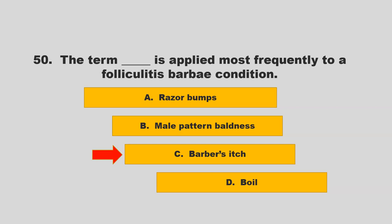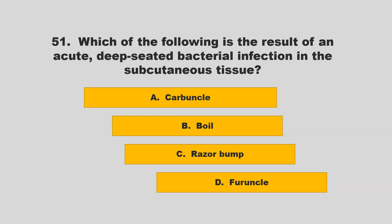Which of the following is the result of an acute deep-seated bacterial infection in the subcutaneous tissue? Is it carbuncle, boil, razor bump, or furuncle? If you chose A, carbuncle, you are correct.